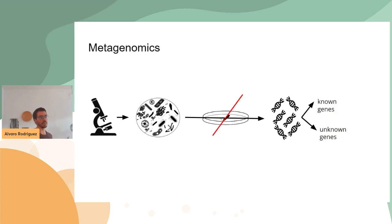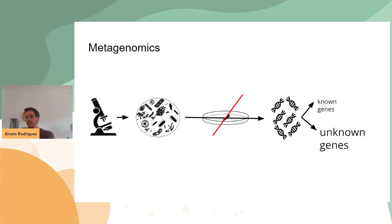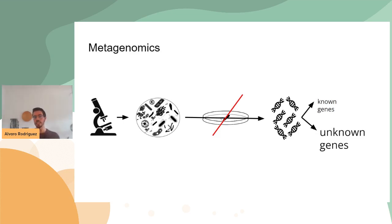That is the minority of species — we are not able to culture most of the microbial diversity. This changed with metagenomics, which is a technique that allowed us to sequence DNA directly from environmental samples without the need for previous cultivation, and provided us access to the genes of uncultivated species for the first time.